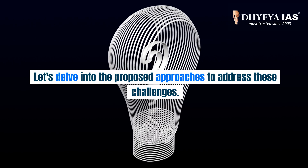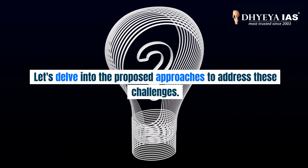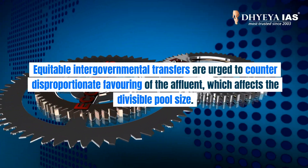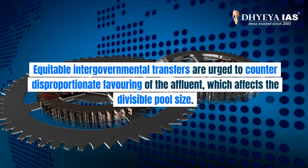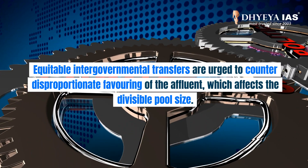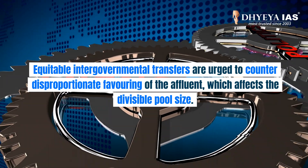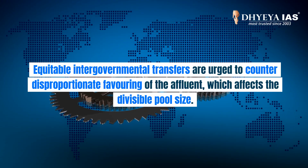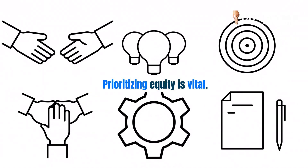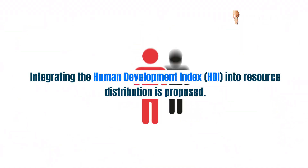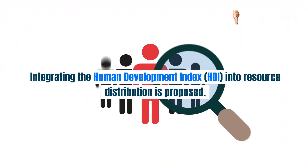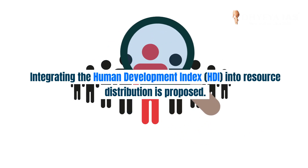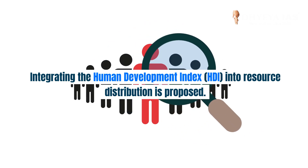Let's delve into the proposed approaches to address these challenges. Equitable intergovernmental transfers are urged to counter disproportionate favoring of the affluent, which affects the divisible pool size. Prioritizing equity is vital. Integrating the Human Development Index, HDI, into resource distribution is proposed.